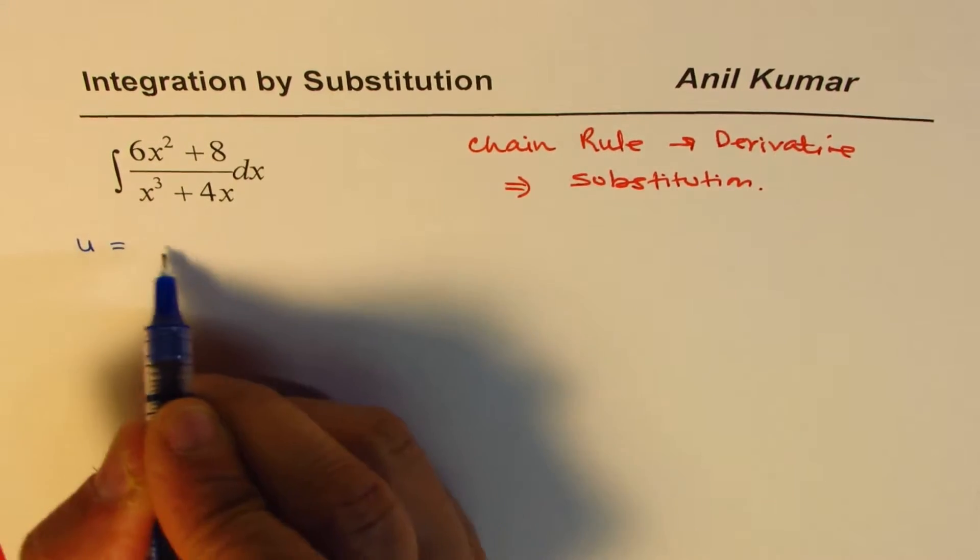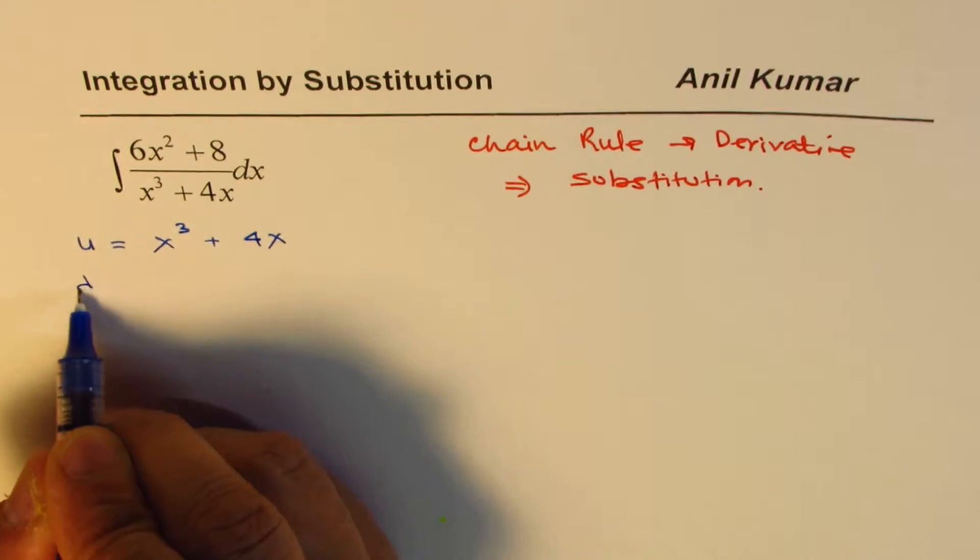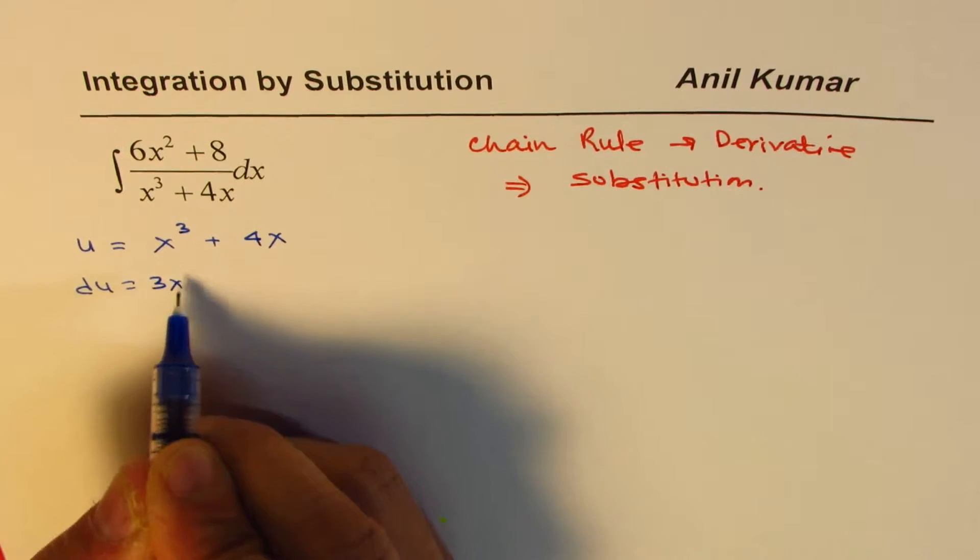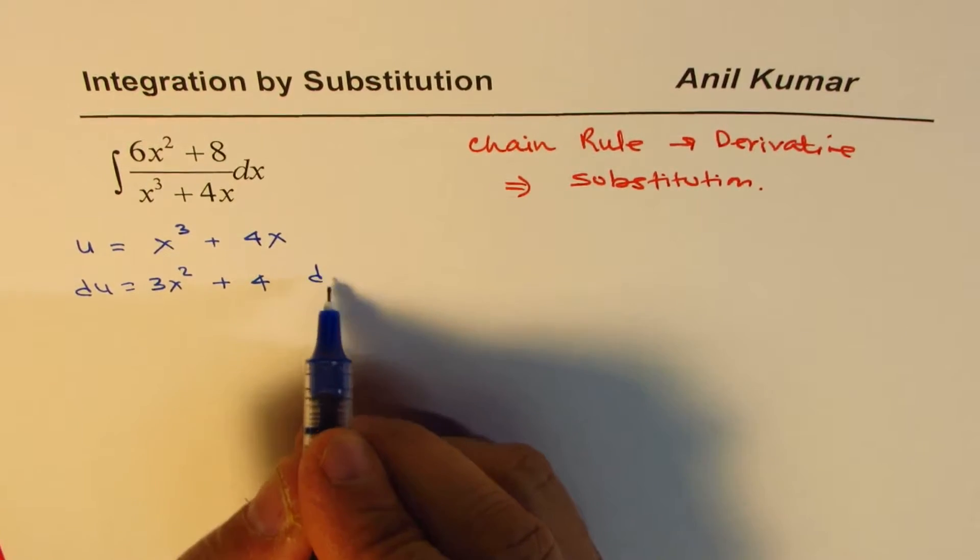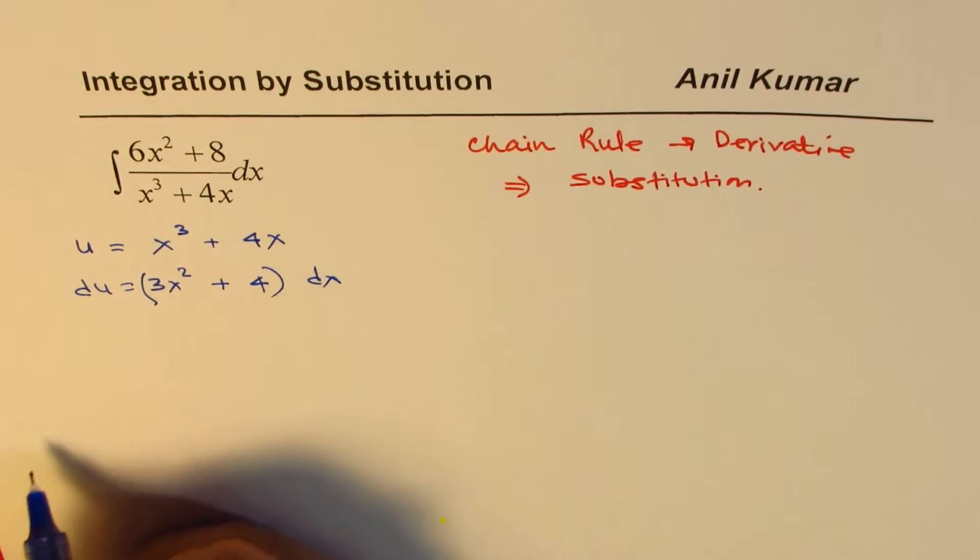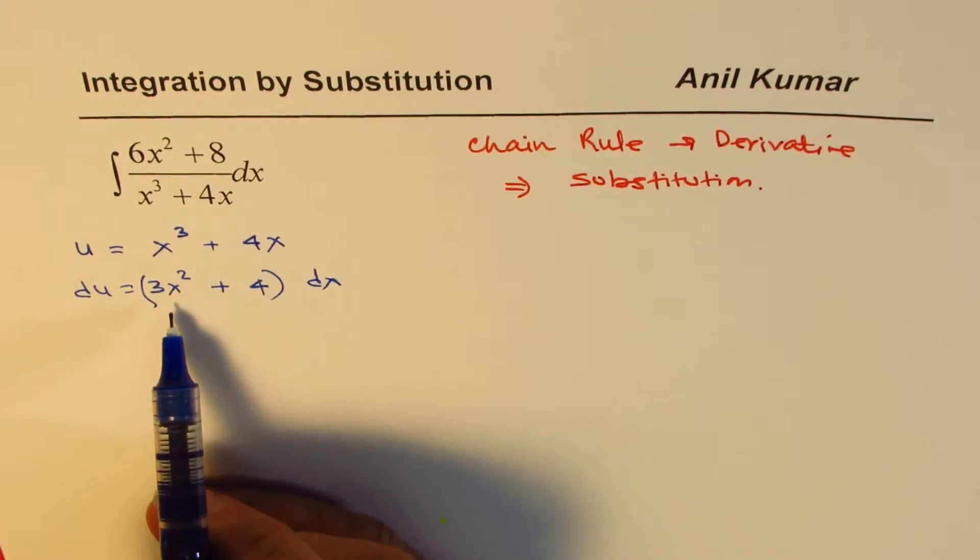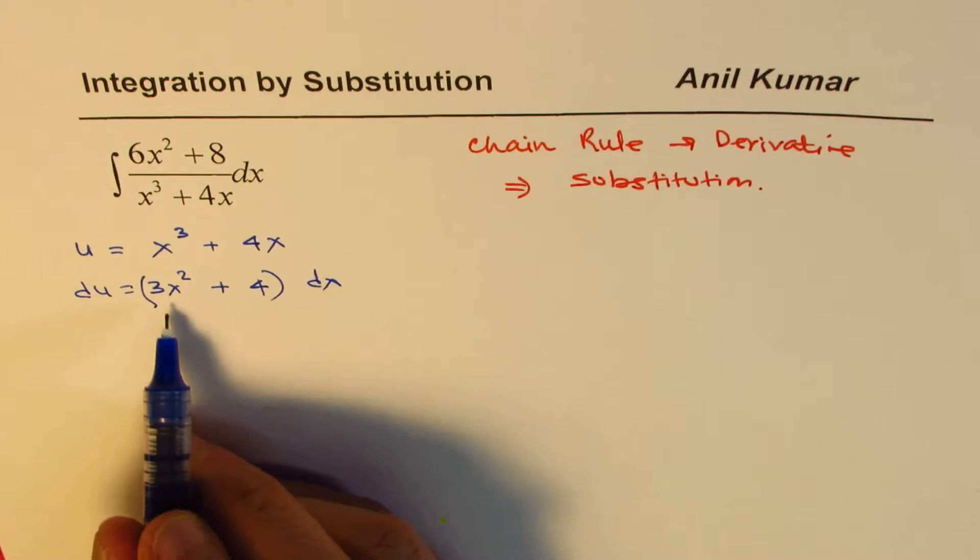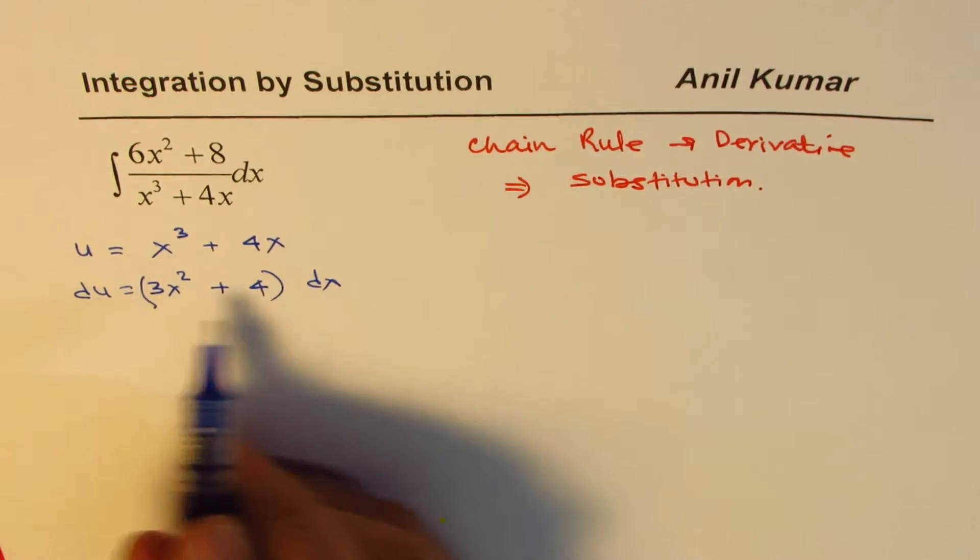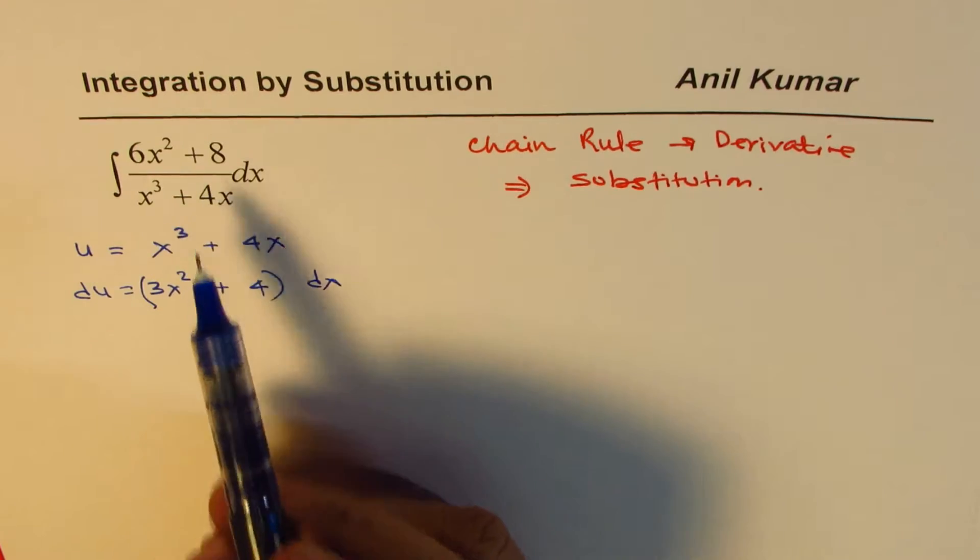So let's substitute the denominator. That is more complicated. We'll write u equals x cubed plus 4x, and du will be 3x squared plus 4 dx. What we have here is 6x squared plus 8, which is kind of twice this. I could multiply by 2 on both sides to make that perfectly match.